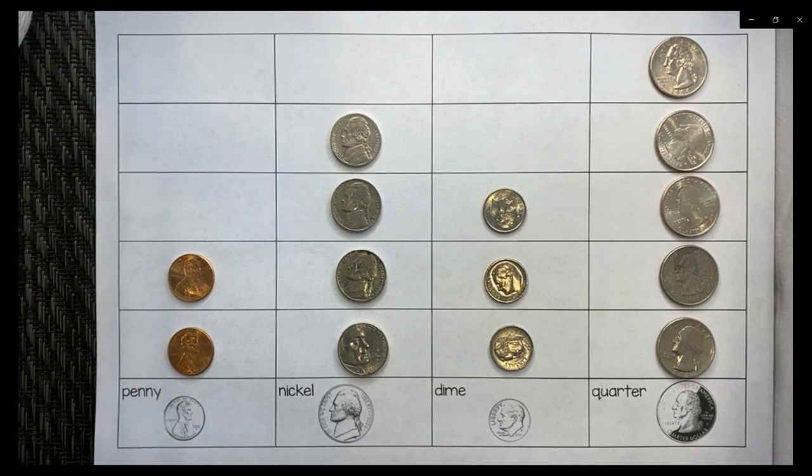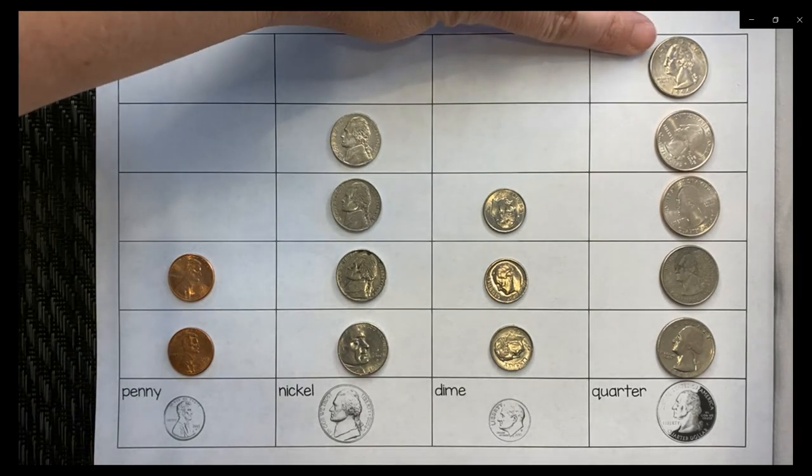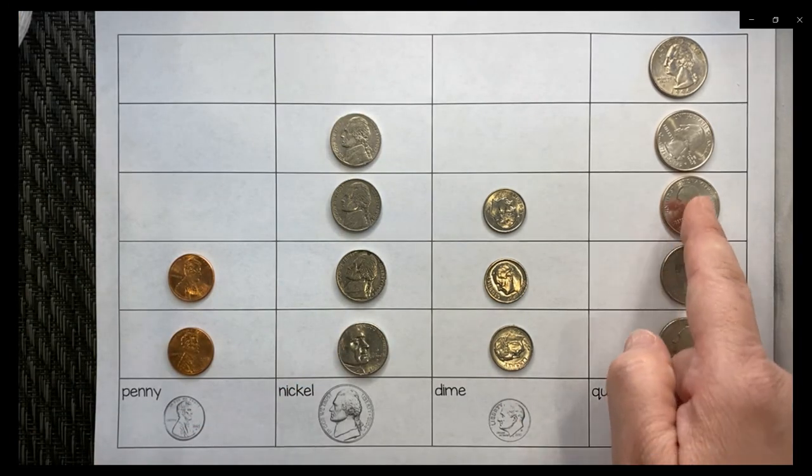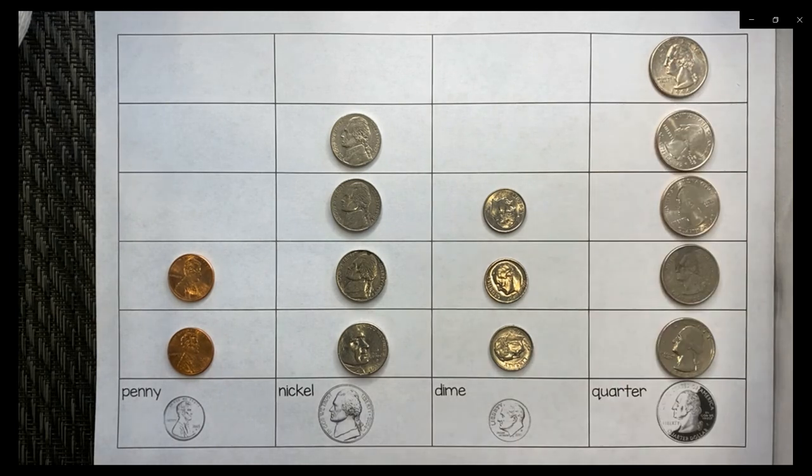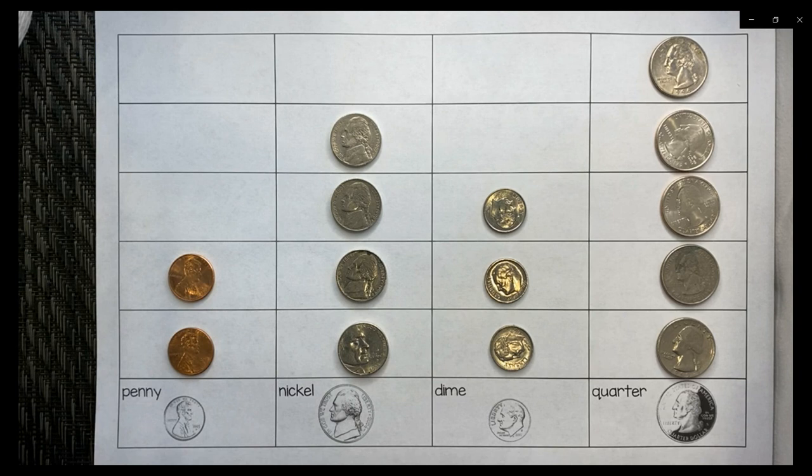Now I want to look at the column that has the most coins. Stop. Massage your brain. Think about your answer. If you said quarters, you are correct. My quarters come all the way to the top. I have one, two, three, four, five quarters. This column of quarters has the most coins, and this column of pennies has the least amount of coins.